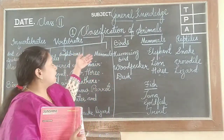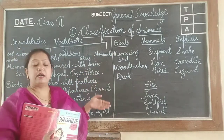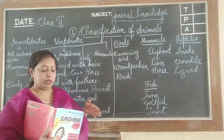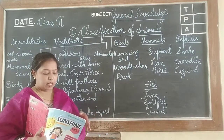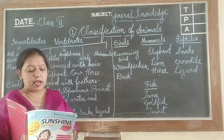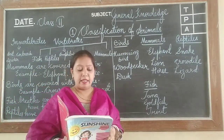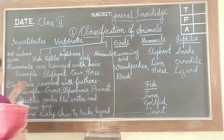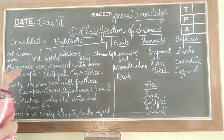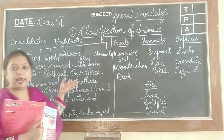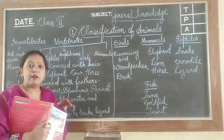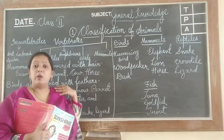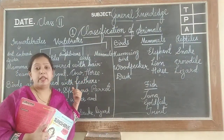How are animals classified? Animals are classified into different groups based on different features. Mammals are covered with hair — for example, elephant, cow, and horse have bodies covered with hair.